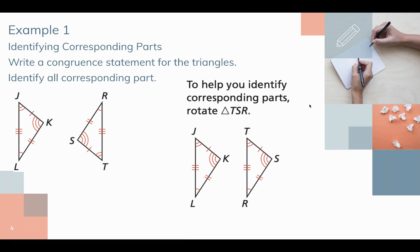Here's our first example. Let's identify corresponding parts. We'll write a congruence statement for the triangles, then identify all the corresponding parts. How many parts are there to a triangle? One triangle has three sides and three angles, so a triangle has six parts. We're going to match up six corresponding parts.